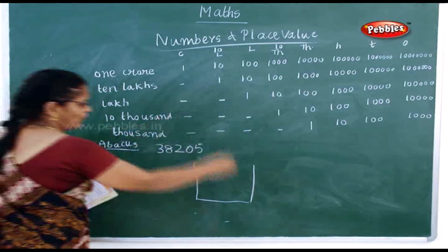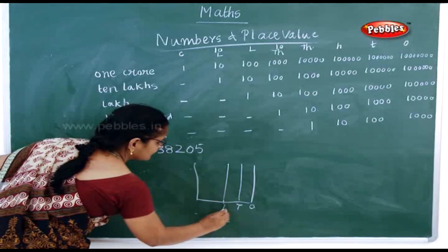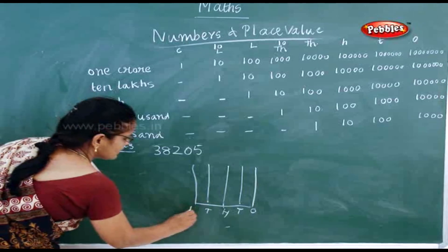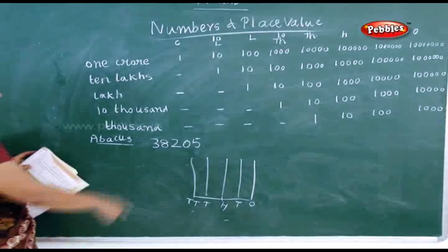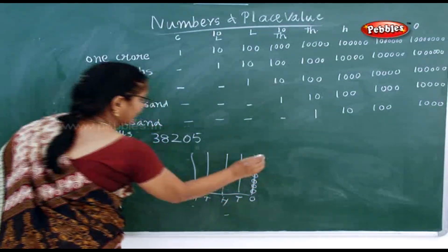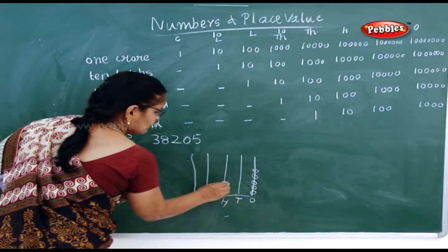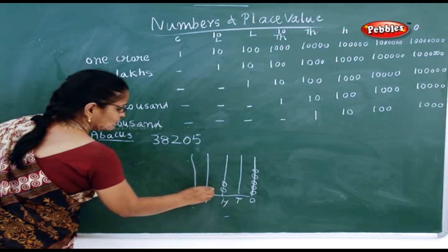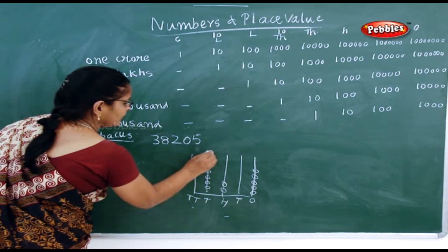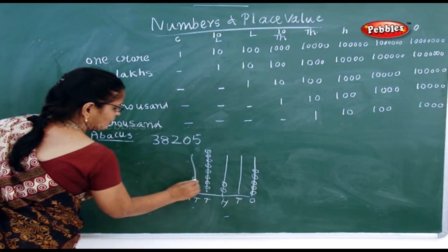Very easy! The place values are ones, tens, hundreds, thousands, and ten-thousands. For 38,205: place 5 rings in ones, nothing in tens (no ring), 2 rings in hundreds, and 8 rings in thousands.